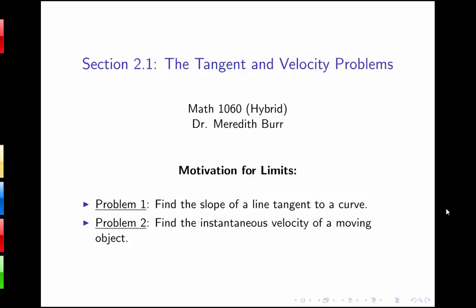In this lecture I'm going to be talking about two problems that motivate the important calculus concept of limits. These two problems are the tangent line problem and the instantaneous velocity problem. The tangent line problem is the problem of finding the slope of a tangent line to a curve at a particular point — a line that touches our curve in exactly one point and has the same slope and direction as the curve. By the instantaneous velocity problem, we mean finding the velocity of some object at a particular moment in time.